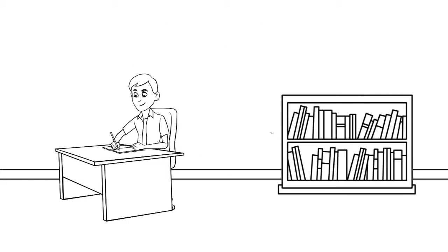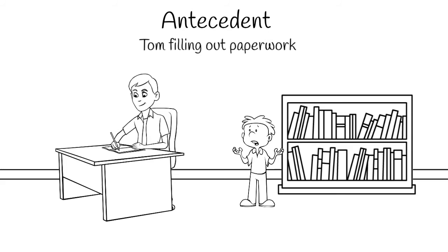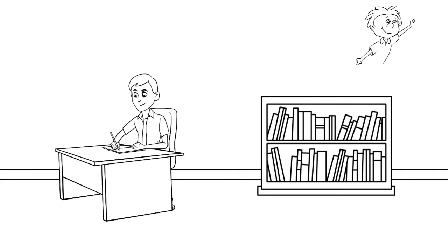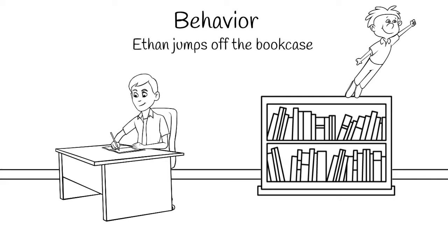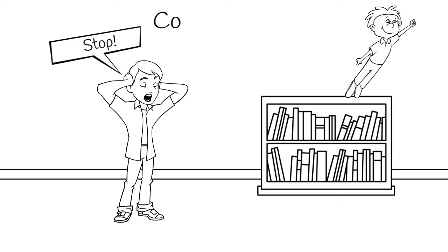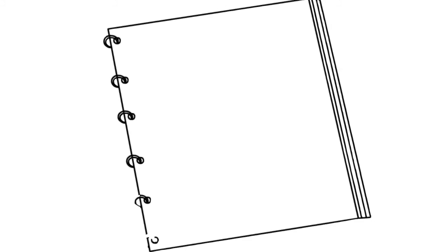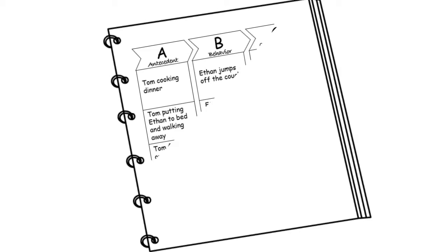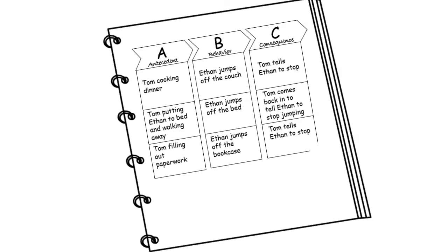The next day, Tom is working on some paperwork when Ethan starts to act up. Ethan jumps off of the bookcase. Frustrated, Tom tells Ethan to stop. As Tom fills out the ABC data sheet, he silently hopes this leads him to an answer. He's not sure how much more of this he can take.